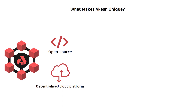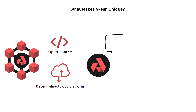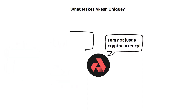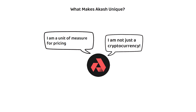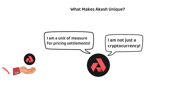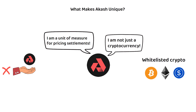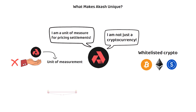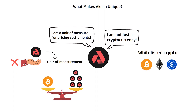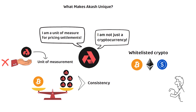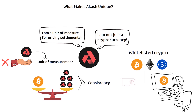More specifically, what makes Akash truly unique is the way it has not pitched itself as a cryptocurrency just used for network payments, but rather as a unit of measure for pricing settlements on its platform. On the Akash platform you don't need to pay in AKT for their services — there are a handful of whitelisted cryptocurrencies they are willing to accept — though AKT will be the unit of measurement for prices, regardless of what currency you pay in, to ensure consistency for the user. So if you want to buy idle GPU power in Bitcoin, on Akash you can.